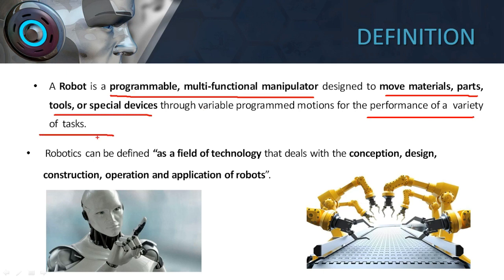The robot performs a variety of tasks. If the same work were instructed to a human being, it might take one day to execute. But if replaced by a robot, the same work will be executed within an hour. That is the advantage we get by using a robot.